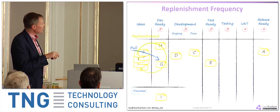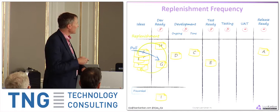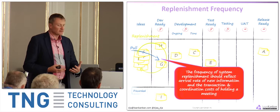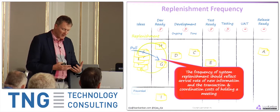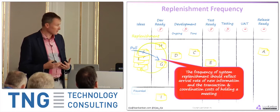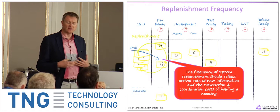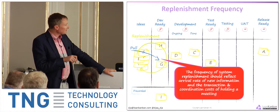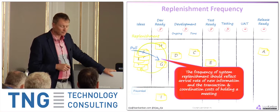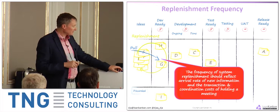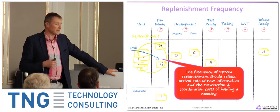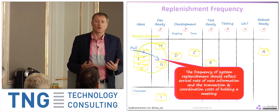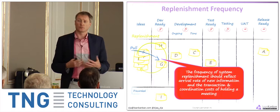The next key thing is: if this is the commitment point, how often do we make those commitments? We refer to that as replenishing the Kanban system. The frequency of replenishment is the interaction of three elements: the transaction and coordination costs of holding the meeting, the arrival rate of new information, and delivery frequency. The more expensive the meeting, the less often you'd want to hold it. But if the arrival rate of new information is very frequent — perhaps every few hours — you'd want to replenish very frequently, perhaps once a day.